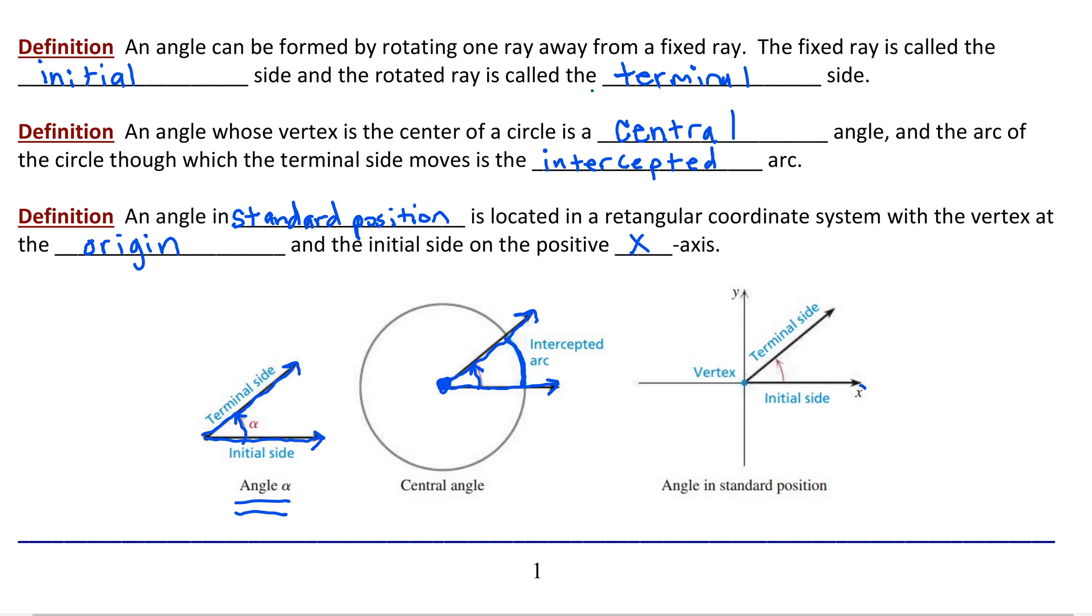initial side on the positive x axis. So if we take the angle alpha that we began examining and we attach it to a rectangular coordinate system, that is, upon an x-y coordinate system, and attach the vertex at the origin, then the initial side will be on the positive x axis and the terminal side rotates away from that positive x axis. That's called an angle in standard position.